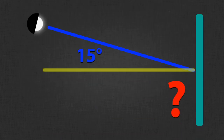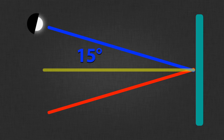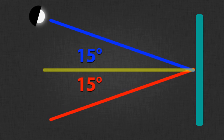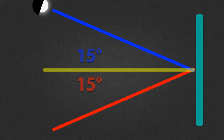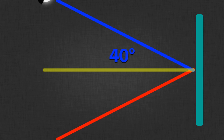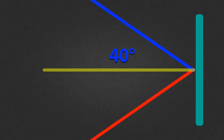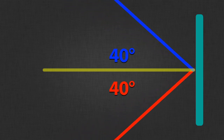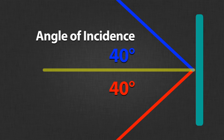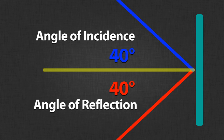So in this scenario, our angle of reflection would be 15 degrees. If our source of light moved to 40 degrees, our angle of reflection would also move to 40 degrees. Our angle of incidence and our angle of reflection are always the same.